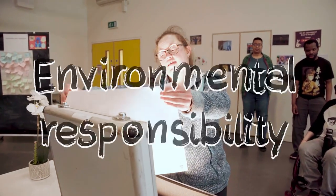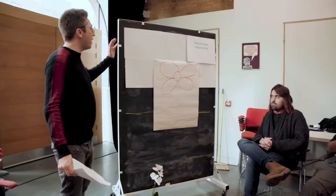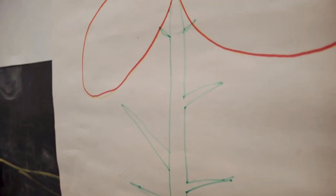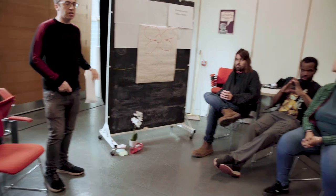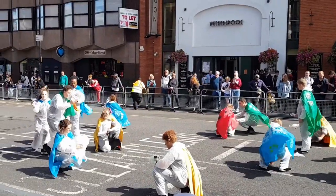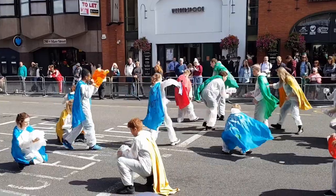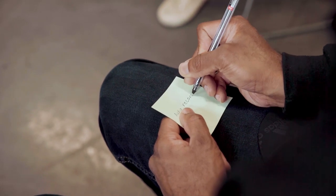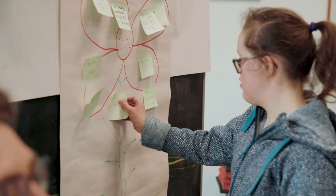Environmental responsibility. Here we have our plant. Any thoughts — what do we need to give it strong roots? What we use for sets — do we recycle? Taking your responsibility seriously when it comes to others. Write down what things we could do as Access All Areas — thinking about the projects, the way of working, the office, the workshops, the shows — what could we do to make sure we are doing better for the environment?